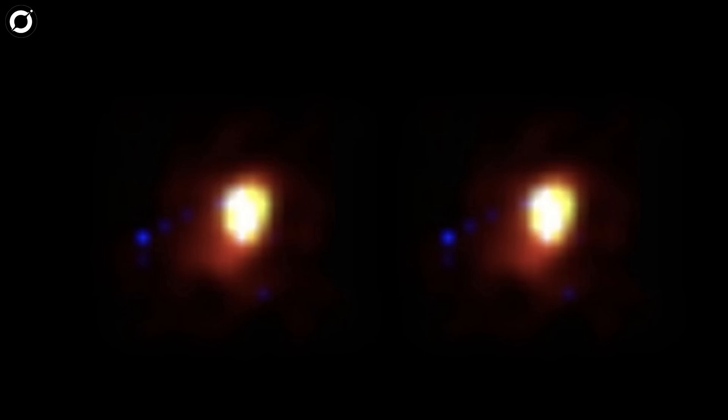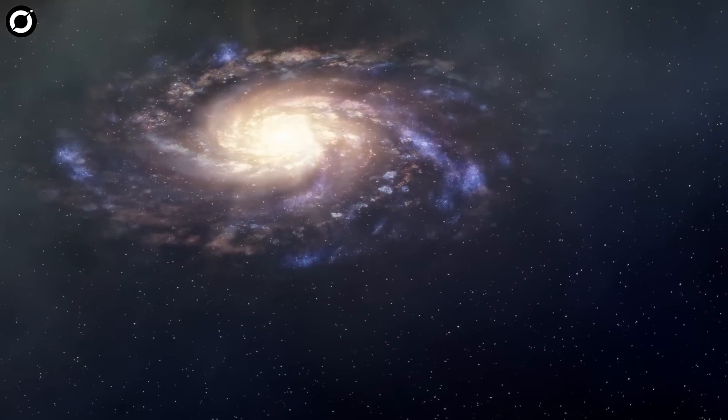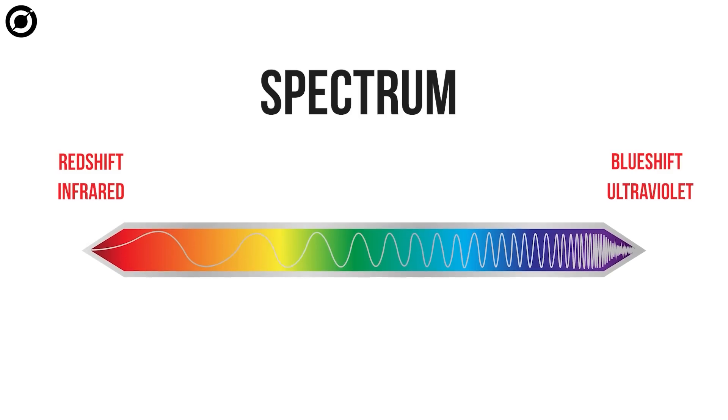How can a galaxy like Schrödinger seem to be in two different places? Well, it's all about redshift. To determine how far away a galaxy lies, astronomers study wavelengths of light.